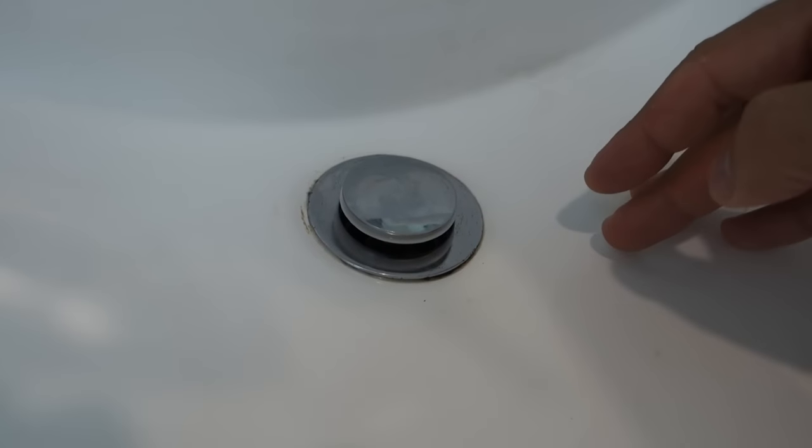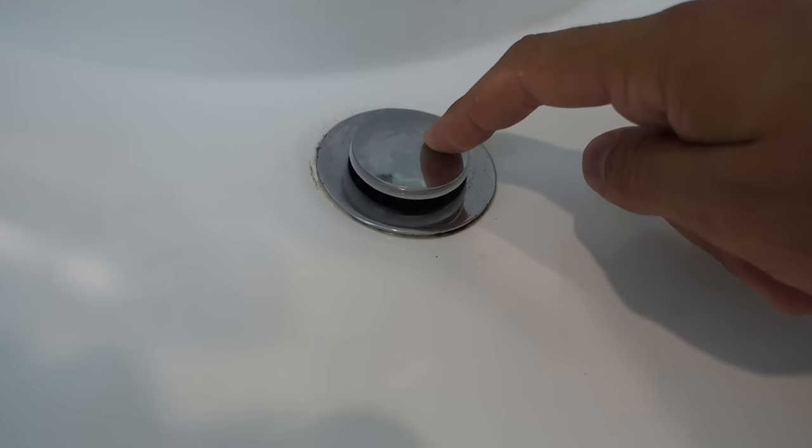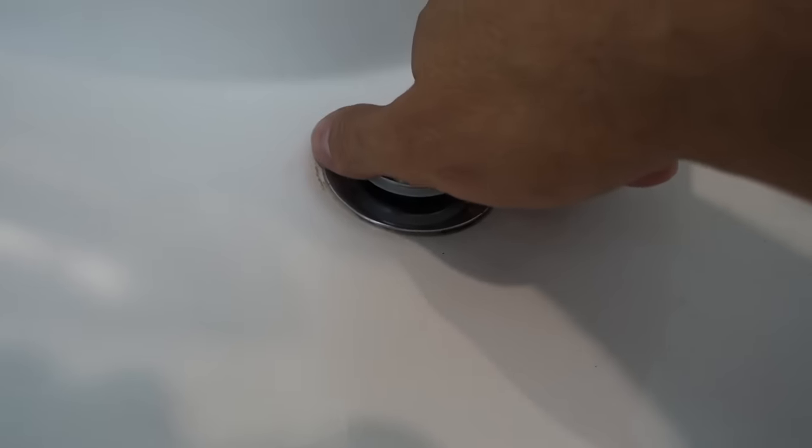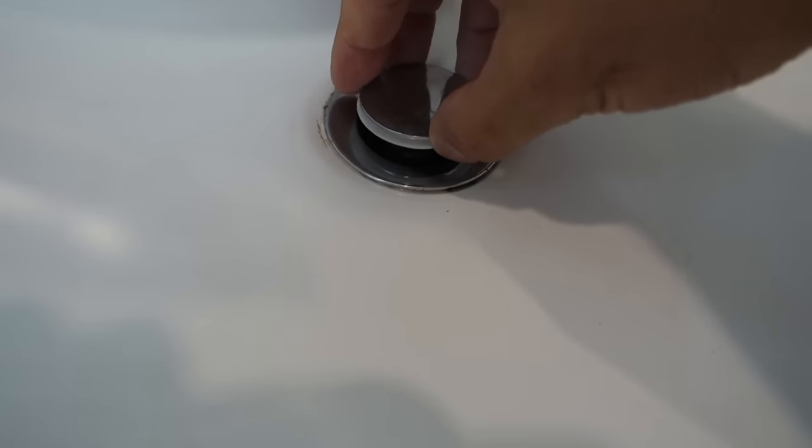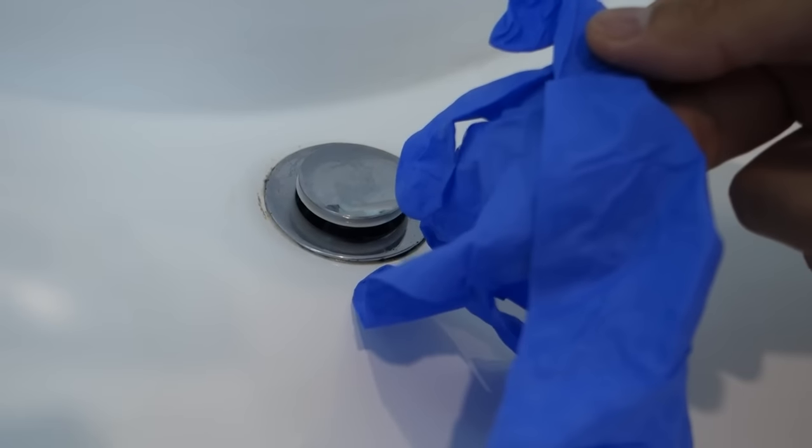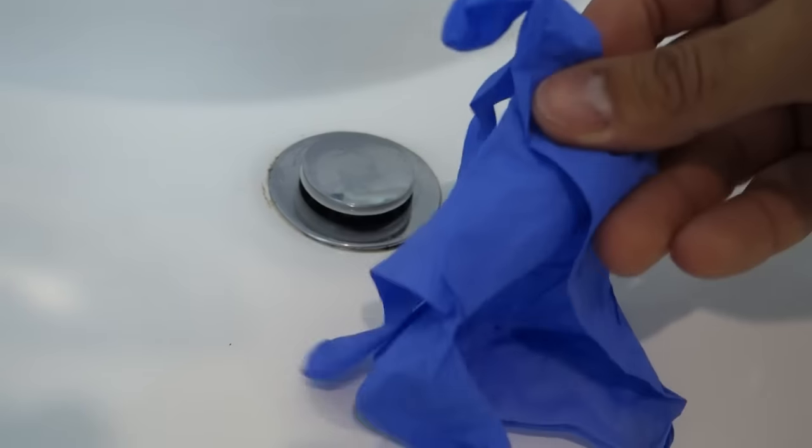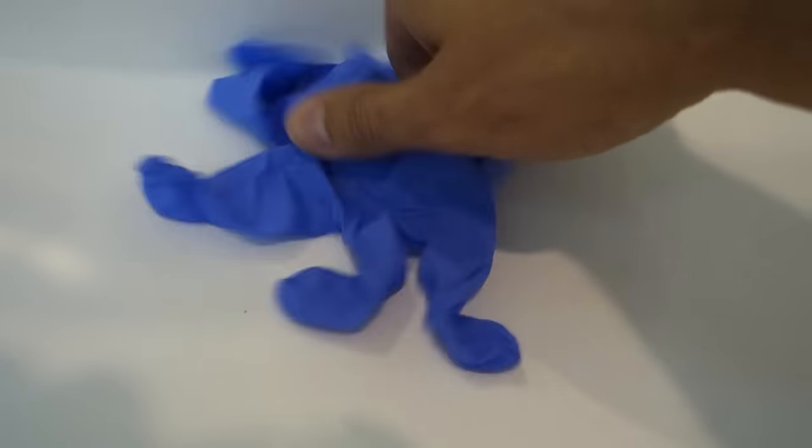Alright guys, so the first thing you need to do is remove this cap off your pop-up waste. The way you remove this is by turning it anti-clockwise, so to the left. You want to just simply get a good grip on that and turn it over to the left. If you're lucky it's nice and loose, you'll be able to remove that. If not, what you need is a pair of rubber gloves. Your kitchen gloves work best because they're a bit thicker. Once again, put it over the top, get a good grip, and turn that over to the left.